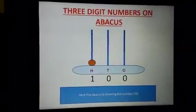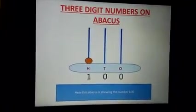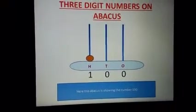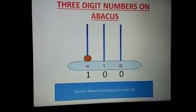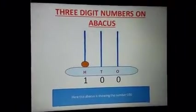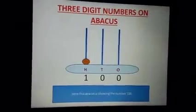For example, here you can see in abacus I have shown number 100. In ones place there is zero, in tens place also there is zero, and in hundreds place there is one. Similarly you can show other numbers also with the help of this abacus.